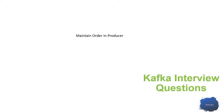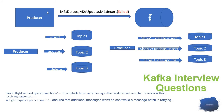In this Kafka interview question session, we are going to discuss how to maintain the order of messages on the producer side. The producer is sending three messages: first an insert, then an update, then a delete. We need to make sure that insert always happens first, then update, then delete — and this order should not be collapsed.